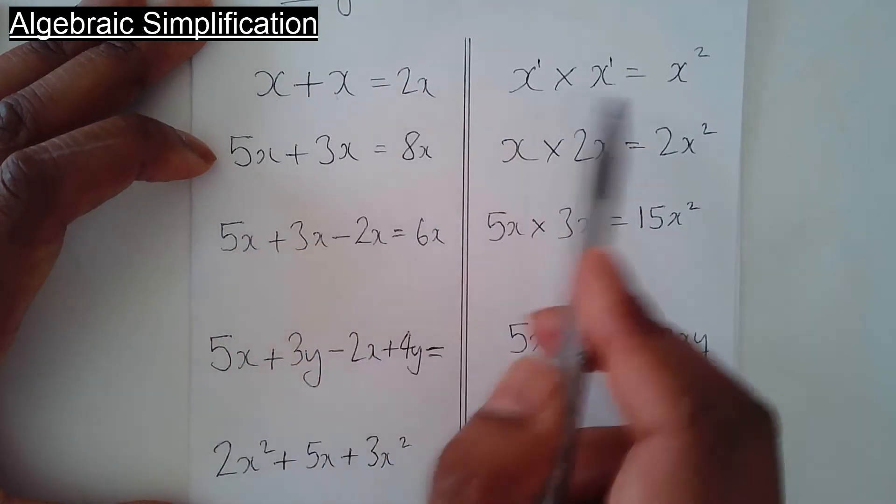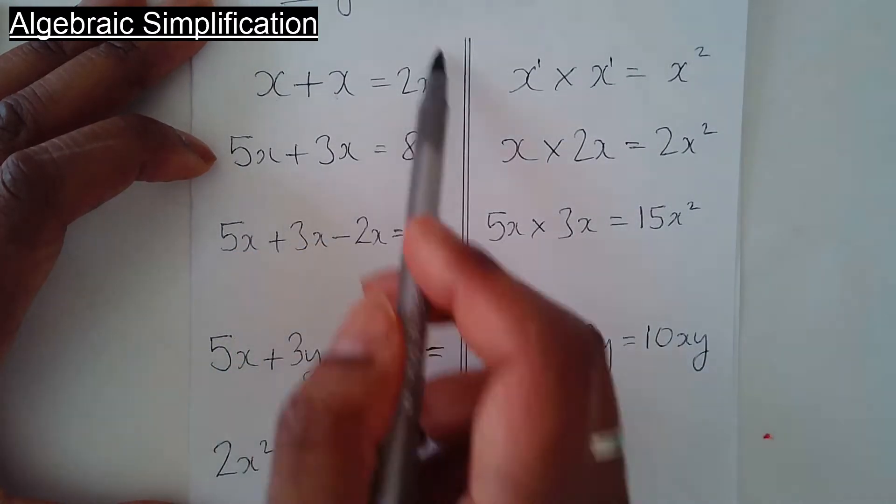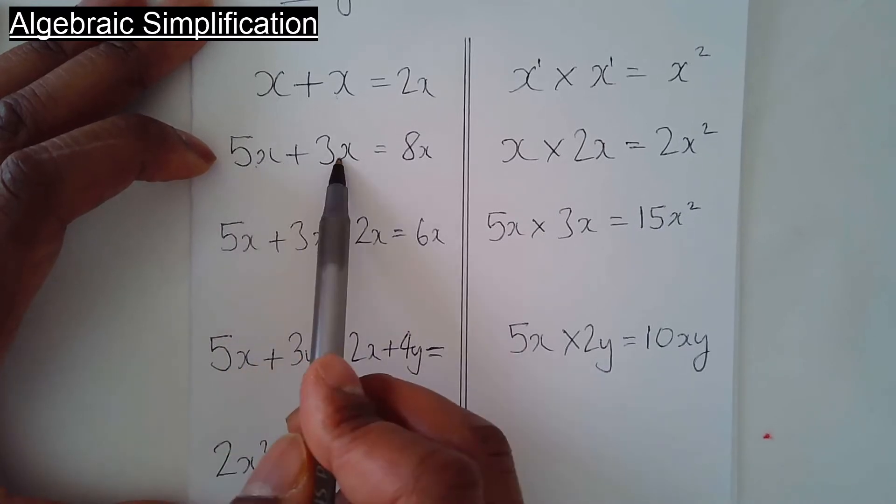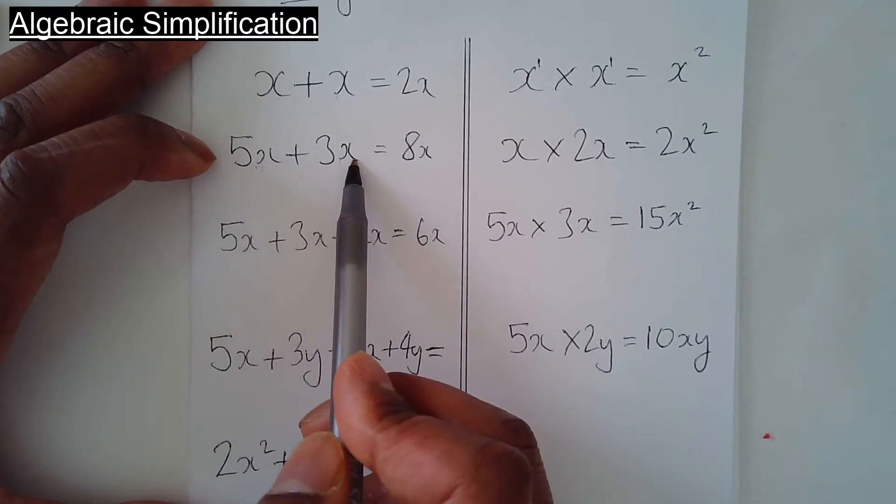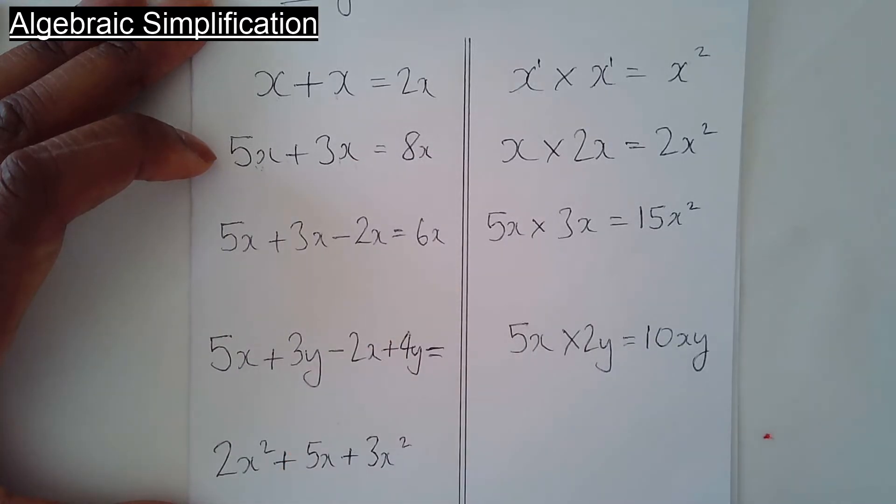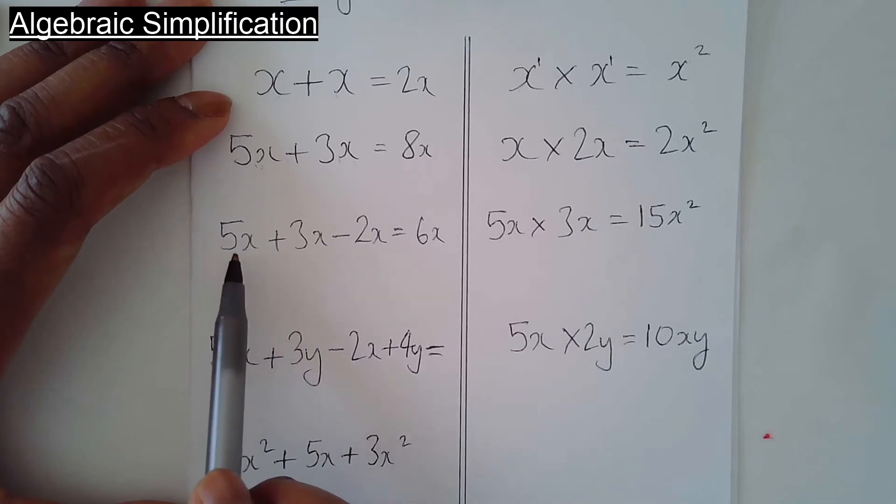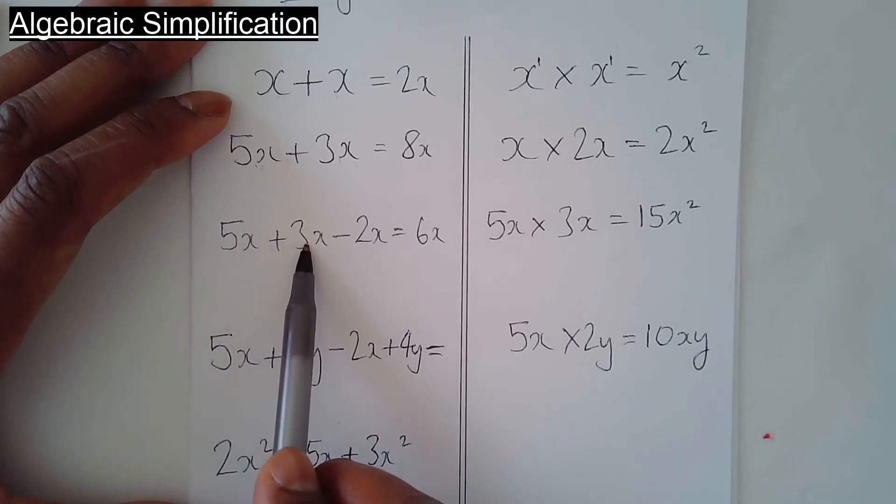Looking this way now, 5x add 3x. Let's say you've got 5 x-rays plus 3 x-rays makes 8 x-rays. Simple as that. Further down, 5x add 3x is 8x. 8x take away 2x is 6x.